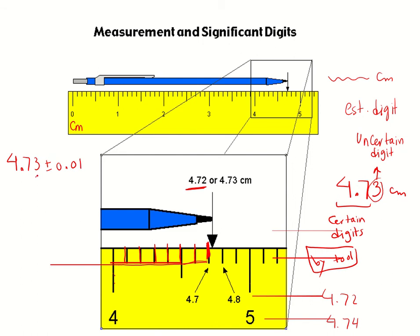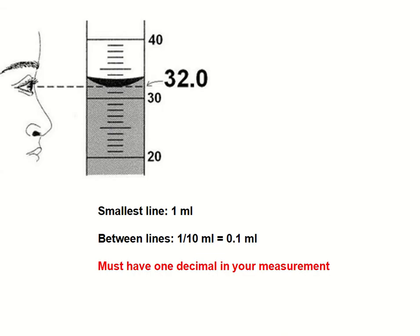In some measurements you may see variation like this — the last digit, the hundredths digit, is probably a bit more or less. That is why we cannot fully trust the last digit of any measurement when we use non-electronic devices. We call that the estimated digit, while the other digits — measured certainly by the tool — we call them certain digits.